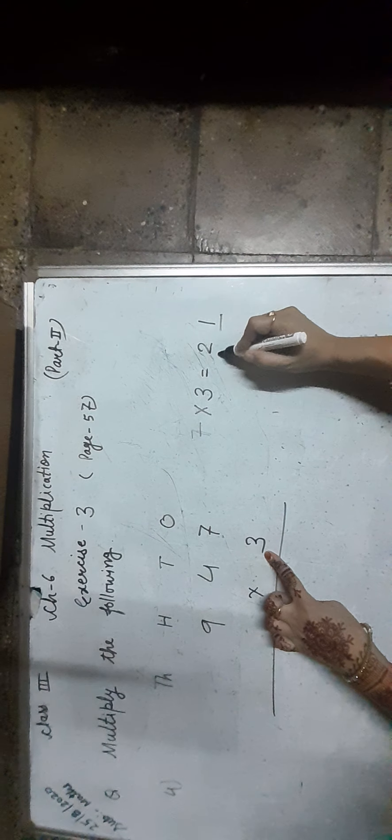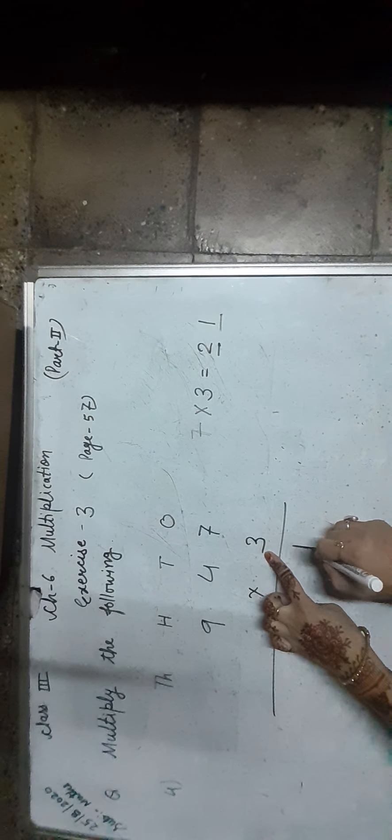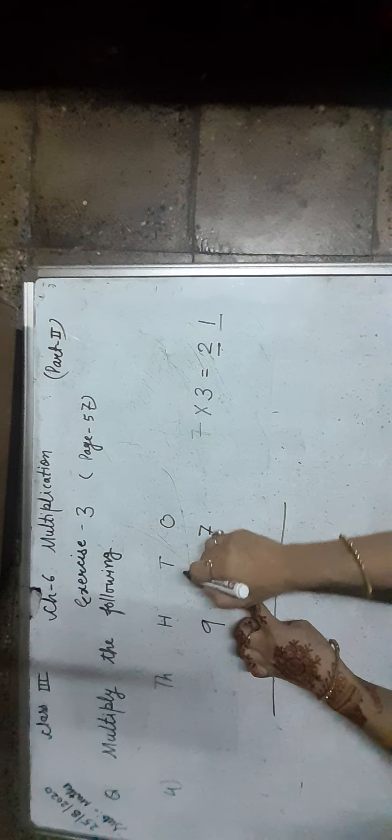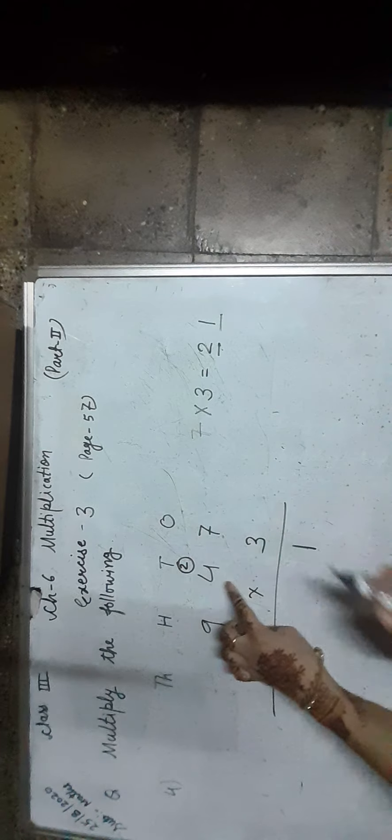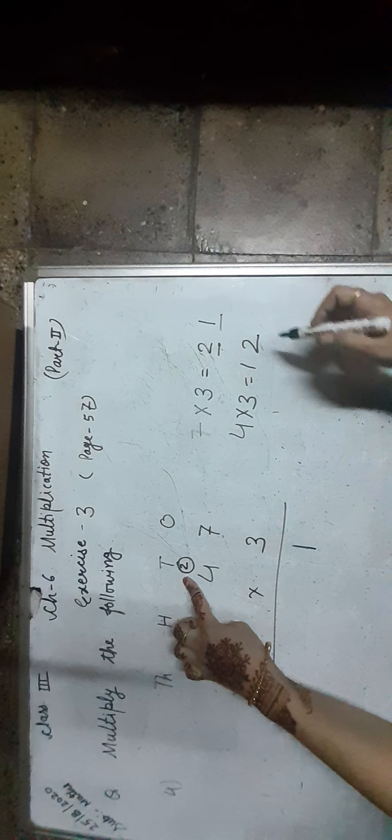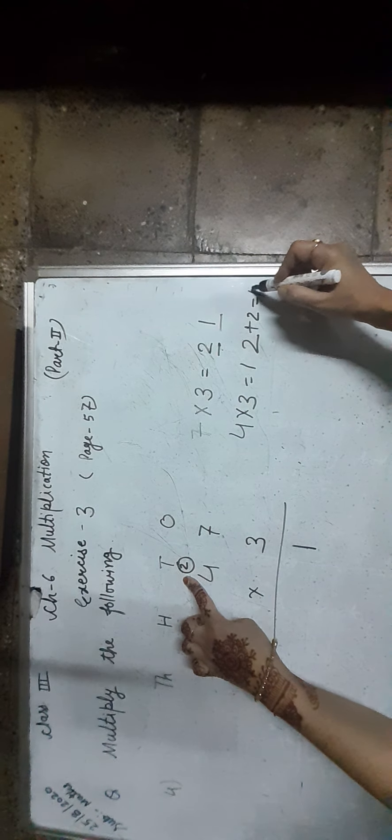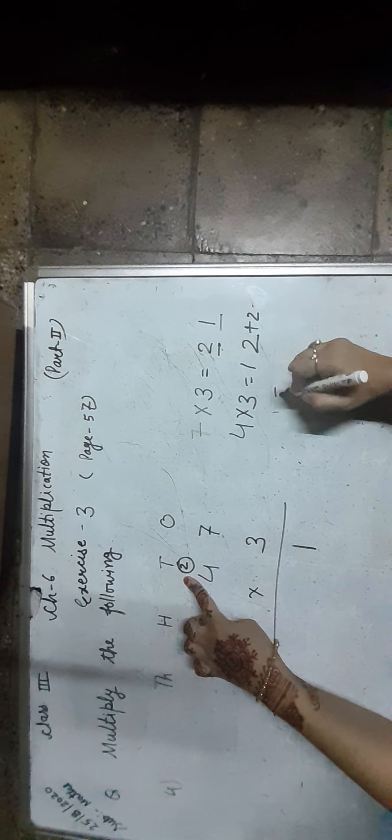Start from the 1s place digit: 7 × 3 is equal to 21. That means 21 ones — 1 one and 2 tens. We write 1 in the 1s place and carry 2 over to the 10s place. Now, 4 × 3 is equal to 12, plus 2 carry over, together 14.